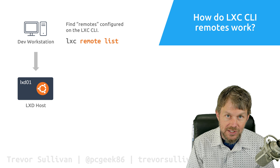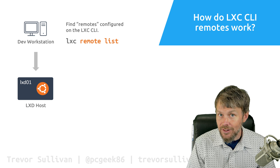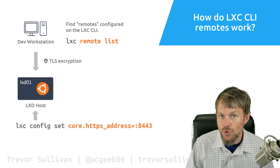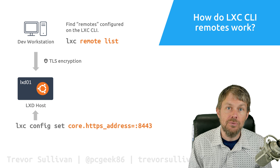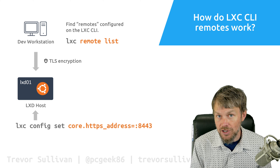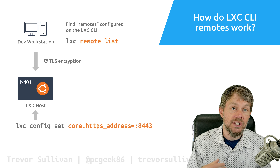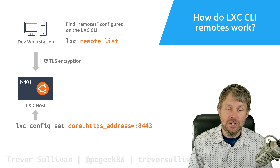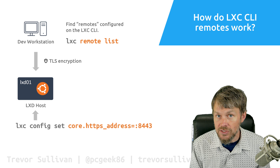On the LXC client, we can discover the configured remotes by using `lxc remote list`. This shows us the default list of remotes configured on any LXC CLI client. But before we actually connect to an LXD engine across the network, we first have to configure the LXD engine to listen on the network. By default, LXD doesn't have a network listener unless you tell the initialization engine that you want to create one.